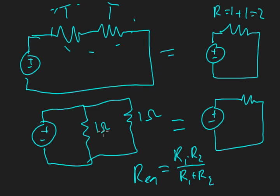So in this case it's going to be 1 times 1 over 1 plus 1, which I hope you know is 2. So that's going to be 1 times 1 is 1, 1 plus 1 is 2. So our equivalent resistance R_eq is going to be one-half or 0.5, and that's of course measured in ohms.